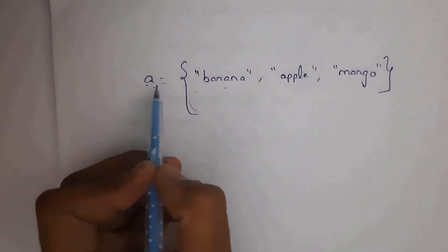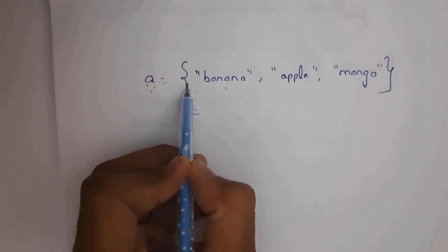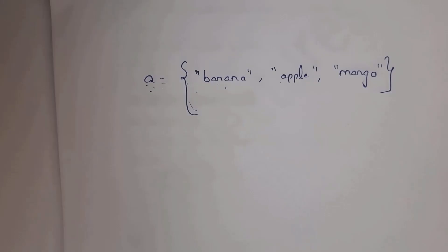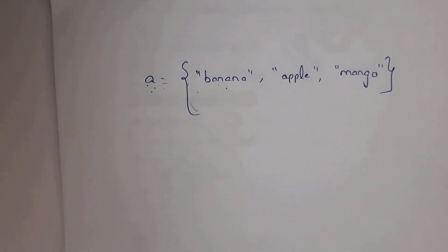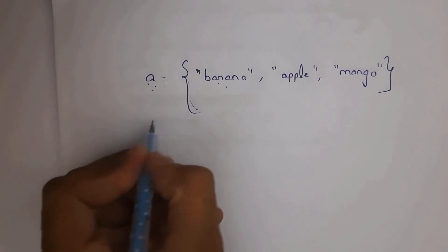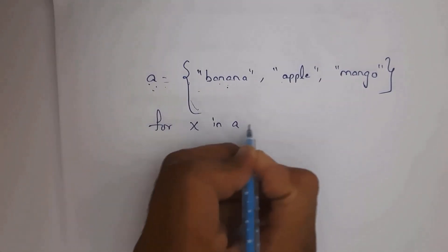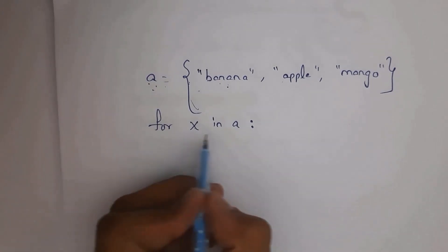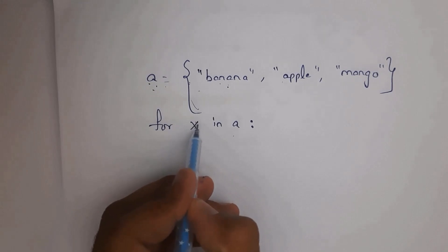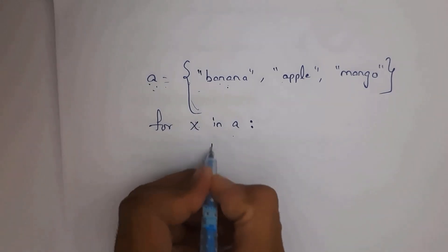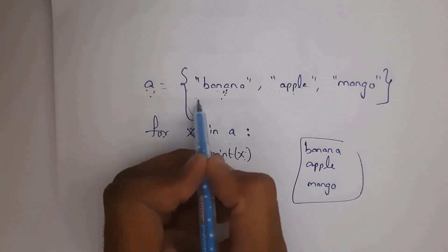Here is one more example. I written a equal to a set containing 3 objects: banana, apple, mango. Now I want to print all these objects one by one. By using a for loop, we can print the objects present in the set one by one. Just write: for x in a — where x is the variable name — and inside the loop write print(x). Whatever data is present inside a will be transferred to variable x and printed.